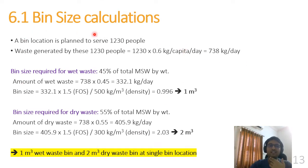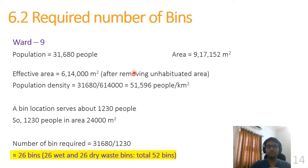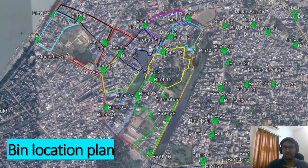In the design process, the first thing we did was calculate the required bin size based on the waste generated, the density of the waste, and by providing 50% extra space to avoid overfilling. This gave us the sizes for both the wet waste and dry waste bins. After that, we sketched the service area of each bin based on waste data and population density, and calculated how many bins are required.